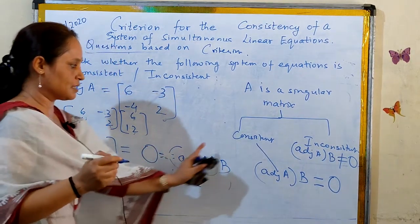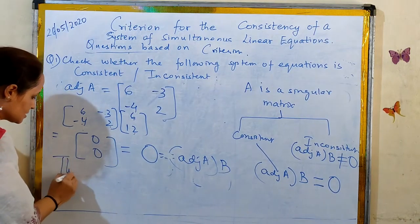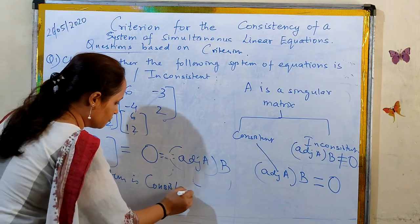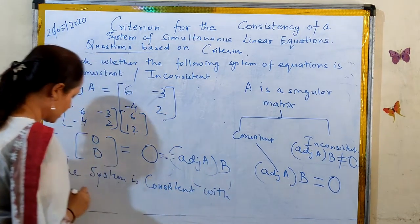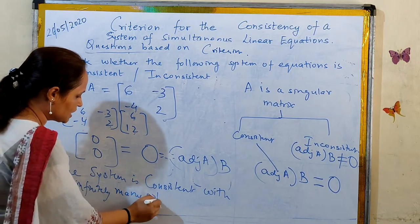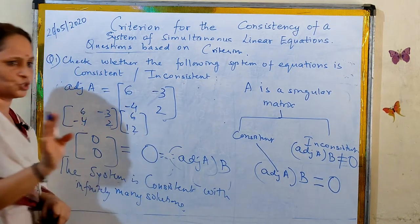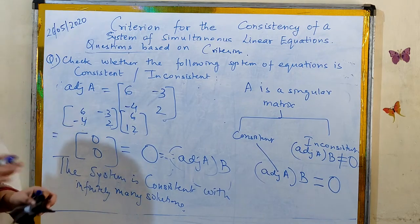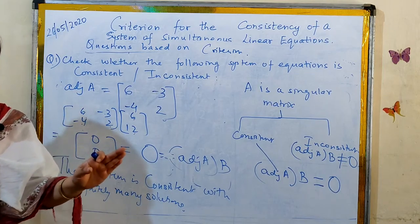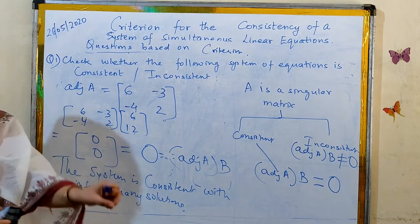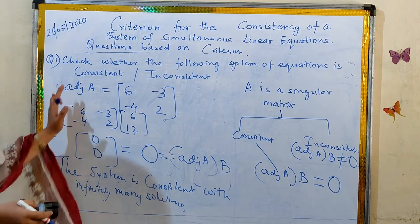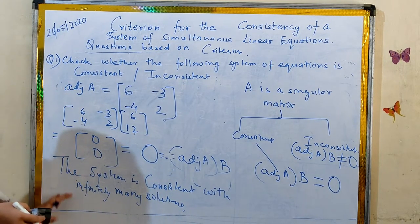Since adjoint of A times B is the null matrix, the system is consistent. The given system of linear equations is consistent with infinitely many solutions. Note that finding the infinitely many solutions is not required in the course — your answer should stop at determining consistency or inconsistency.